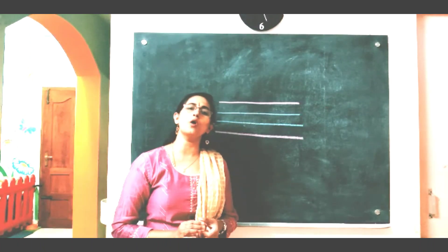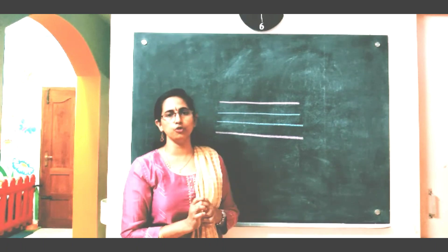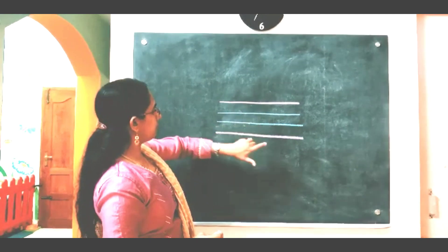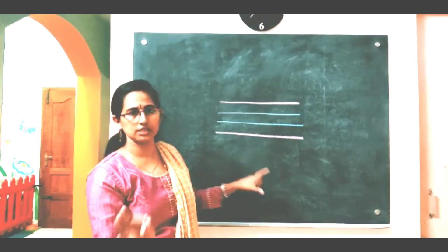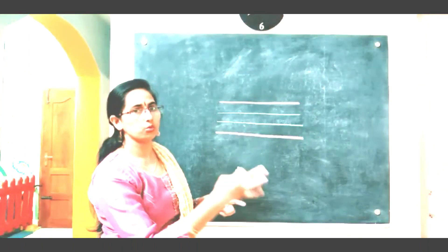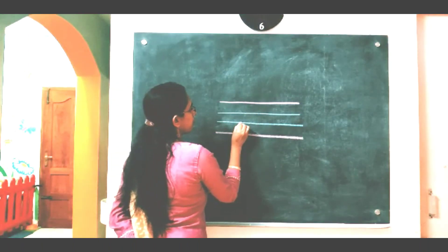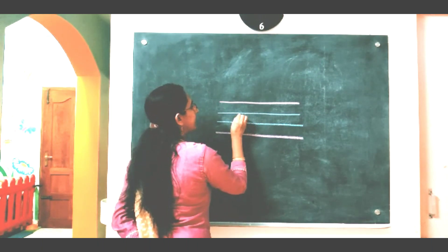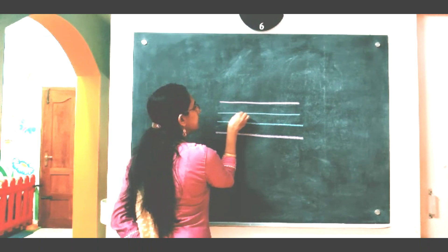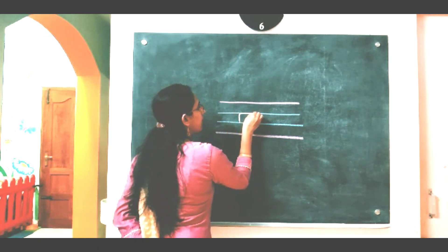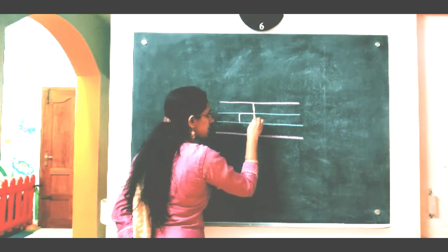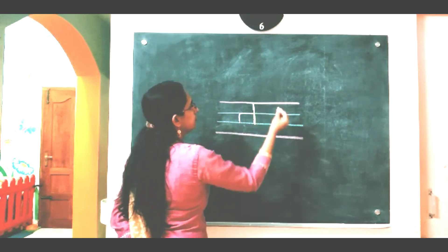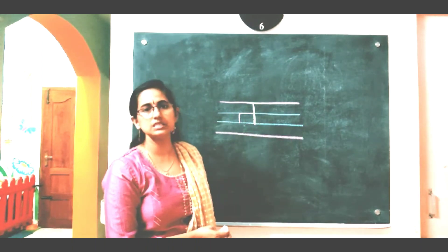Now I will show you how to write this Ta in your four-rule notebook. Look at the pole — red line, blue line, blue line, red line. You are all thorough with the line concept, so it's very easy to write. From this blue line, go up, up, up, take a curl and a sleeping line and a standing line from red line to the second blue line. And one more sleeping line on top of this red line. This is Ta.